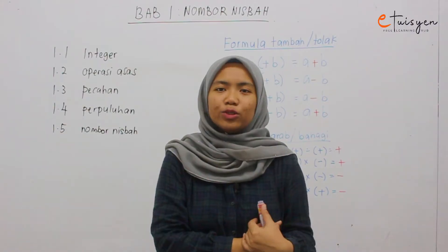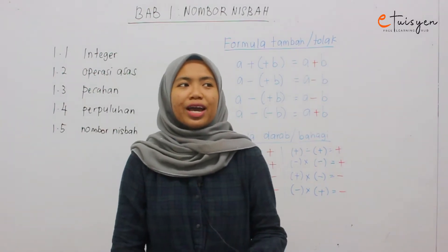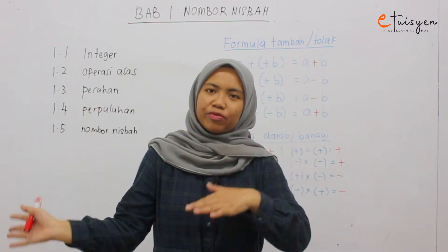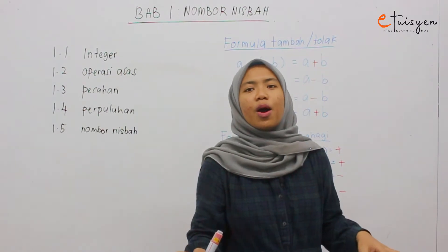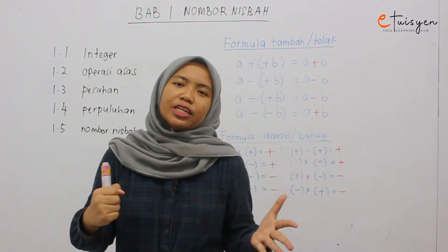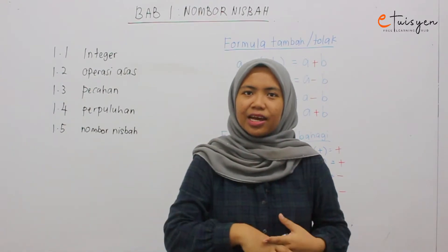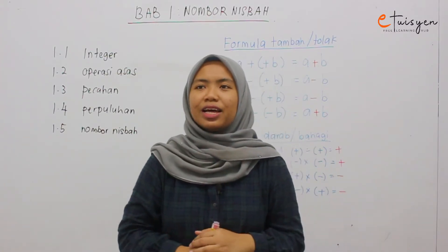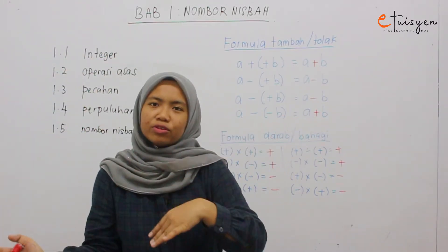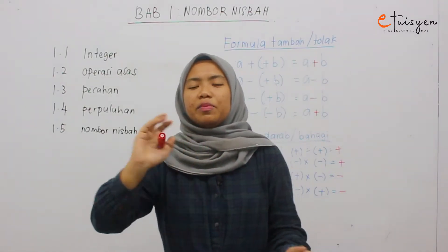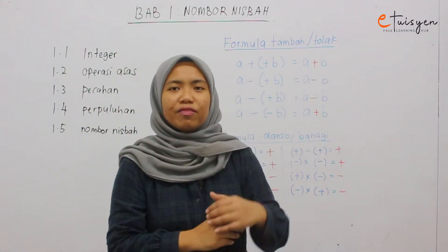Kita belajar pengenalan kepada integer. Integer adalah nombor yang boleh jadi negatif atau positif, tapi dia mestilah nombor bulat — dia tak boleh nombor pecah atau nombor perpuluhan. Kita juga belajar macam mana nak susun nombor integer dalam satu garis nombor, di mana nombor yang kurang daripada kosong kita letak ke belah kiri, dan yang lebih daripada kosong kita letak ke belah kanan.